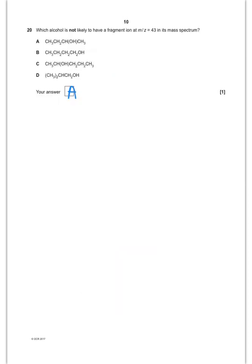If you have a look at these alcohols, you will be able to work out that A does not produce a reasonable fragment. You can't get a fragment ion by breaking bonds for that molecule A to produce a fragment ion with a mass of 43. All the others will.